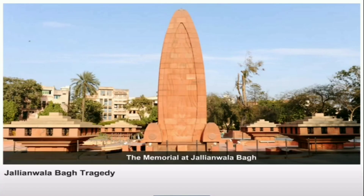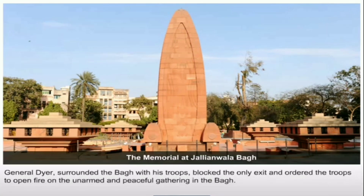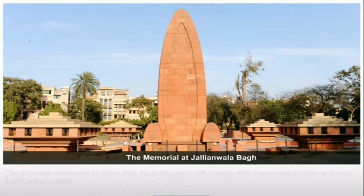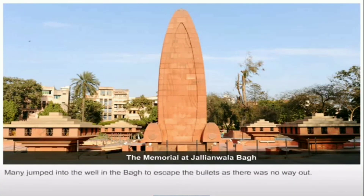Jallianwala Bagh Tragedy: General Dyer surrounded the Bagh with his troops, blocked the only exit, and ordered the troops to open fire on the unarmed and peaceful gathering in the Bagh. The shooting continued till there was no ammunition left. Nearly 400 people were killed and over 1,000 were injured. Many jumped into the well in the Bagh to escape the bullets as there was no way out.